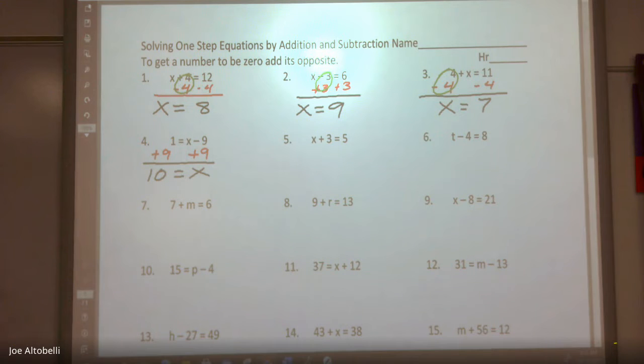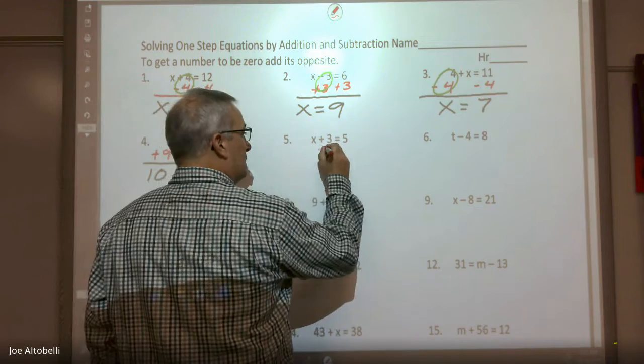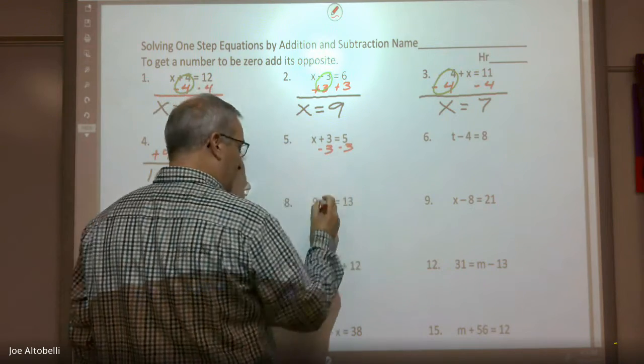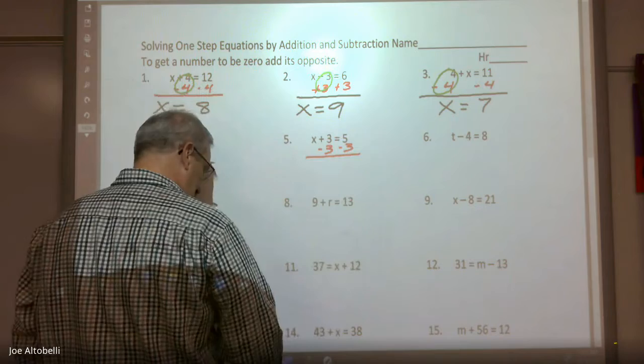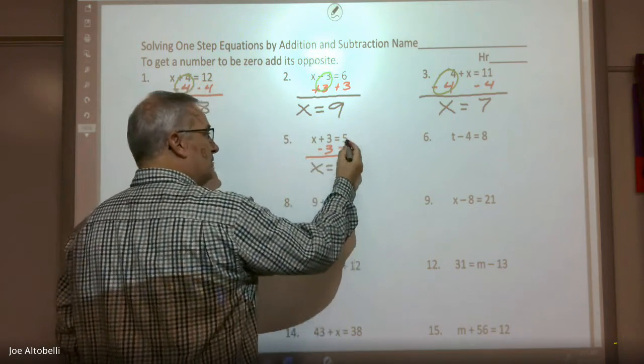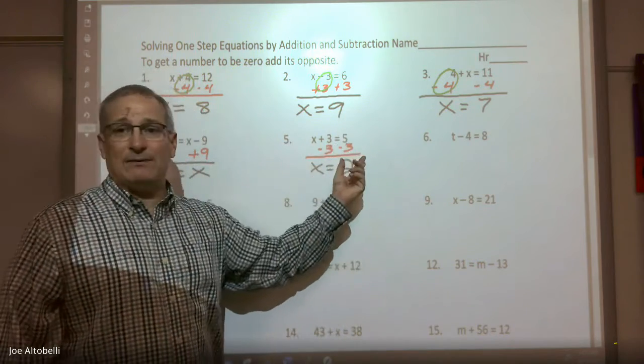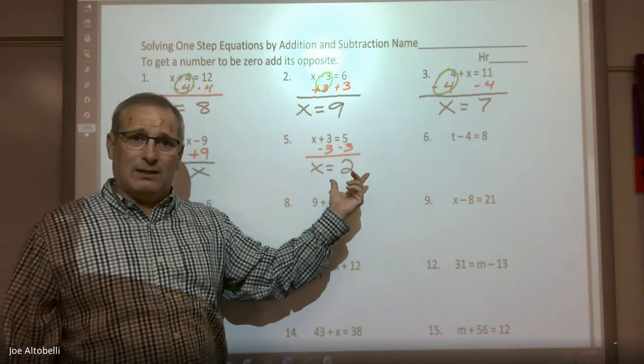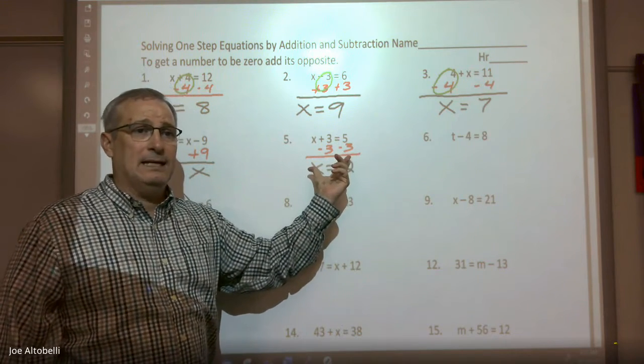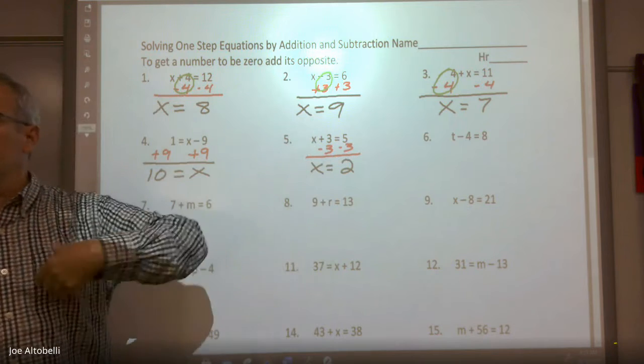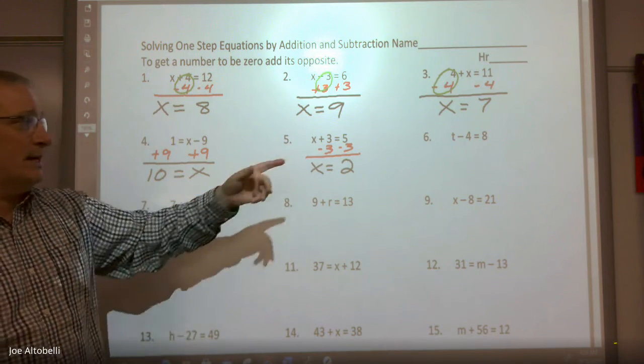Number five. What am I going to write on both sides? What am I going to add to both sides? Negative 3. So I'm adding a negative 3 to both sides. So I get x = 2. Now if you can't do 5 + (-3) in your head to get the right answer, then get out your calculator and do it, because eventually you're going to get positive and negative numbers, and it's going to be a little bit more complex. You need to get the right answer.